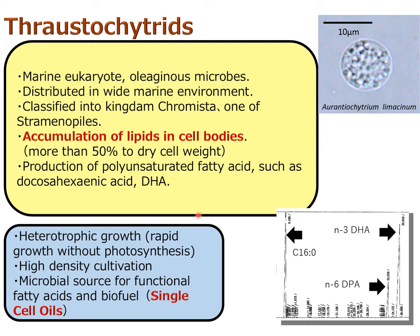From left to right: saturated fatty acids, then increasing carbon chain length toward polyunsaturated fatty acids. DHA is very famous in fish oil, but fish oil has many fatty acids. In this thraustochytrid species, we can see a large peak for saturated fatty acid at carbon-16, then at carbon-18 the peak is almost absent — unlike plant oils — and finally two large peaks appear, with this one being DHA. The fatty acid composition is very simple compared to fish oils.